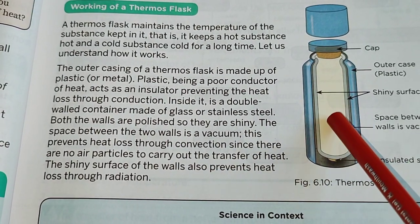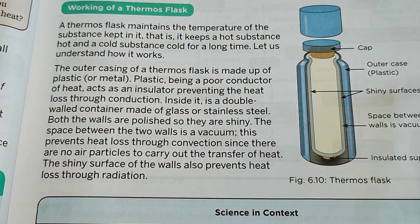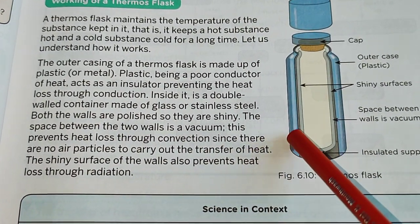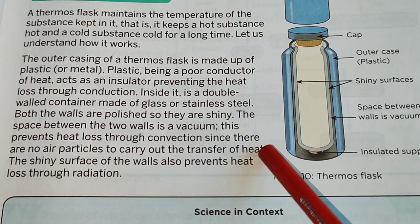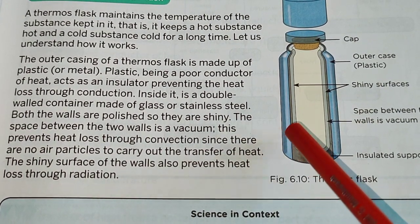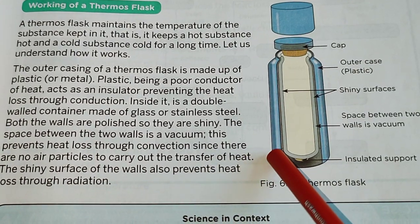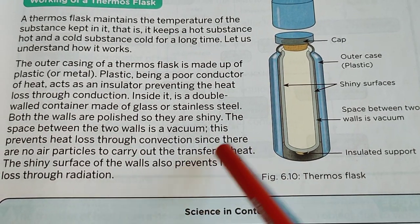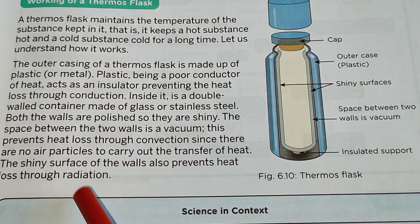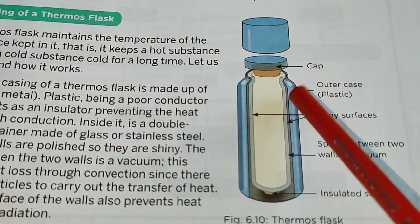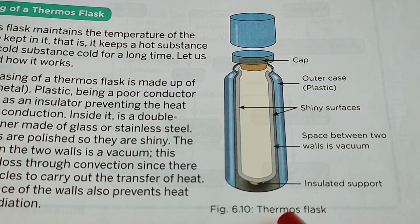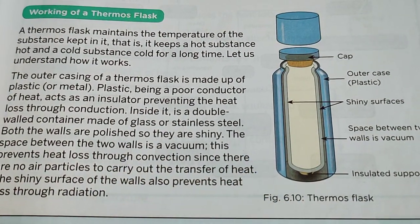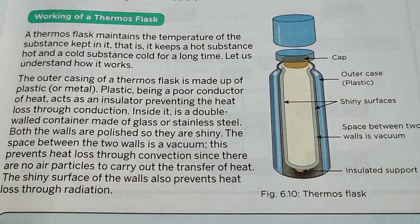Inside the thermos flask is a double-walled container made of glass or stainless steel. Both walls are polished, so they are shiny. The space between the two walls is a vacuum — this vacuum prevents heat loss through convection since there is no air present to carry heat. The shiny surface of the walls prevents heat loss through radiation. So the most important parts are the shiny surfaces and the vacuum space between the walls — that is how a thermos flask works based on the concept of radiation of heat.